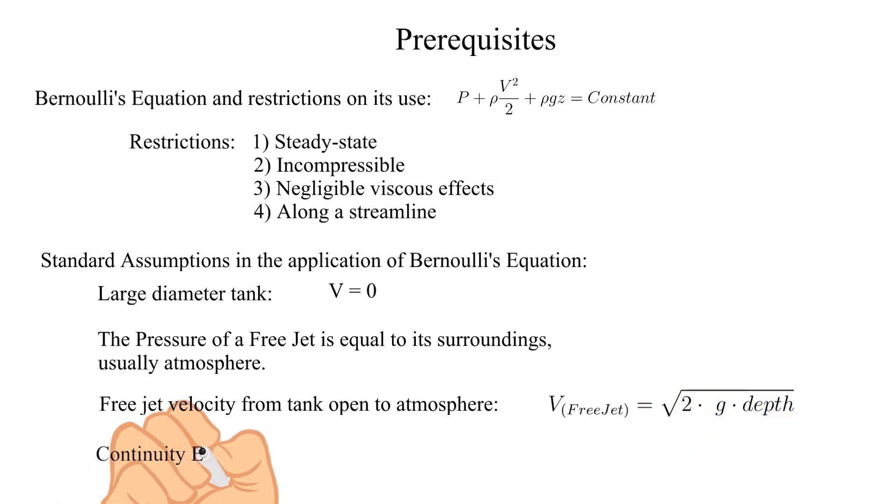We will also be using the law of conservation of mass, often referred to as the continuity equation. In this example it will be for steady state flow in a pipe. The continuity equation is the product rho VA is constant.